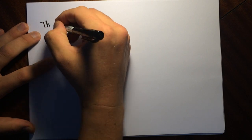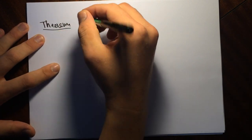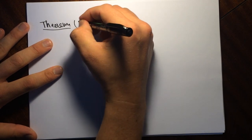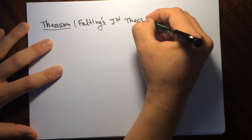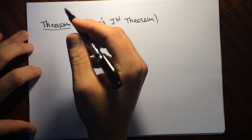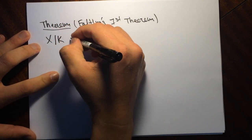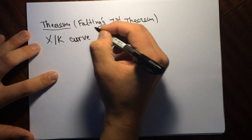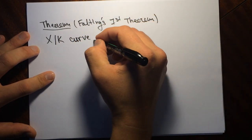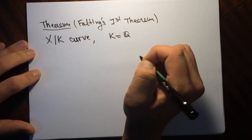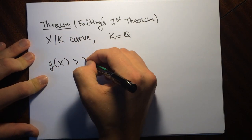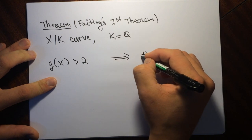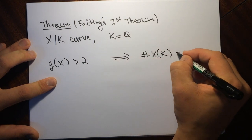Here's the theorem — we'll call this Falting's First Theorem. It says that if we take X over k, a curve, and take k to be equal to Q, and we take the genus of X, if this is bigger than 2, then this implies that the number of k-points is going to be finite.